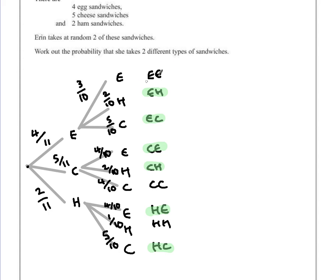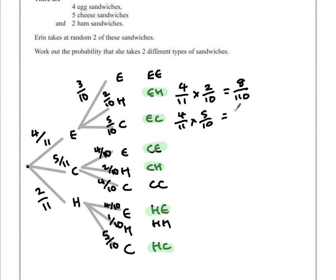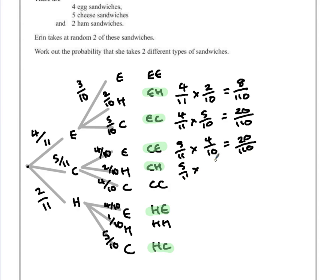The probability of egg and then ham: we've got 4 over 11 multiplied by 2 over 10, which gives us 8 out of 110. For egg and cheese, that's 4 over 11 times 5 over 10, which is 20 over 110. For cheese and ham, we have 5 over 11 multiplied by 2 over 10, which is 10 out of 110.